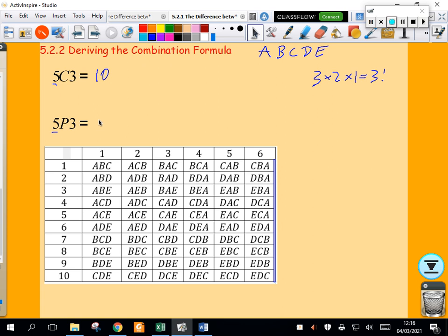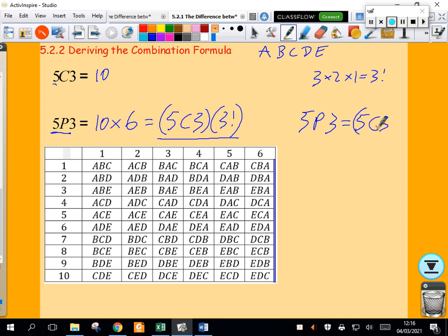What do we have? We've got my 10 choices here multiplied by the 6 ways to arrange each one. The 10 comes from 5 choose 3, and the 6 comes from 3 factorial. So 5 permute 3 equals 5 choose 3 multiplied by 3 factorial. We have a formula for 5 permute 3 - that's 5 factorial divided by 5 minus 3 factorial.